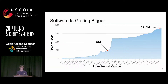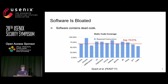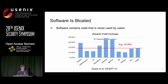As we all know, software is getting crazily bigger. Take the Linux kernel as an example: version 2.6 has around 5 million lines of code, which grows to 17.5 million lines in version 4.9. We have to ask, is all the code necessary? A previous study evaluated commonly used software including Firefox and Clang, showing that software is usually bloated. For static code coverage, the average coverage is 73%, meaning around 27% is dead code. It gets worse for dynamic code coverage — only 21% of code is actually executed for normal usage.